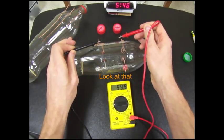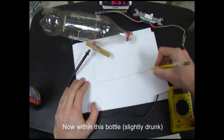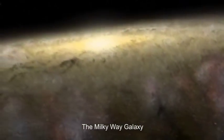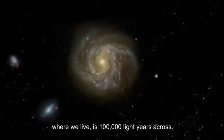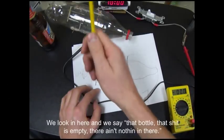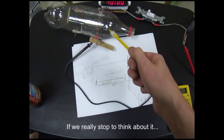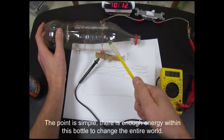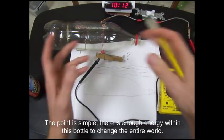Look at that. That right there, 59.9 is the highest reading I have received yet. Now, within this bottle is a spiral arm galaxy. The Milky Way galaxy, where we live, is a hundred thousand light years across, from end to end. We look in here and we say, that bottle, that shit is empty. There ain't nothing in there. If we really stop to think about it, it's called the Planck scale, it's called vacuum energy, it's called zero point. The point is simple, is that there's enough energy within this bottle to change the entire world.